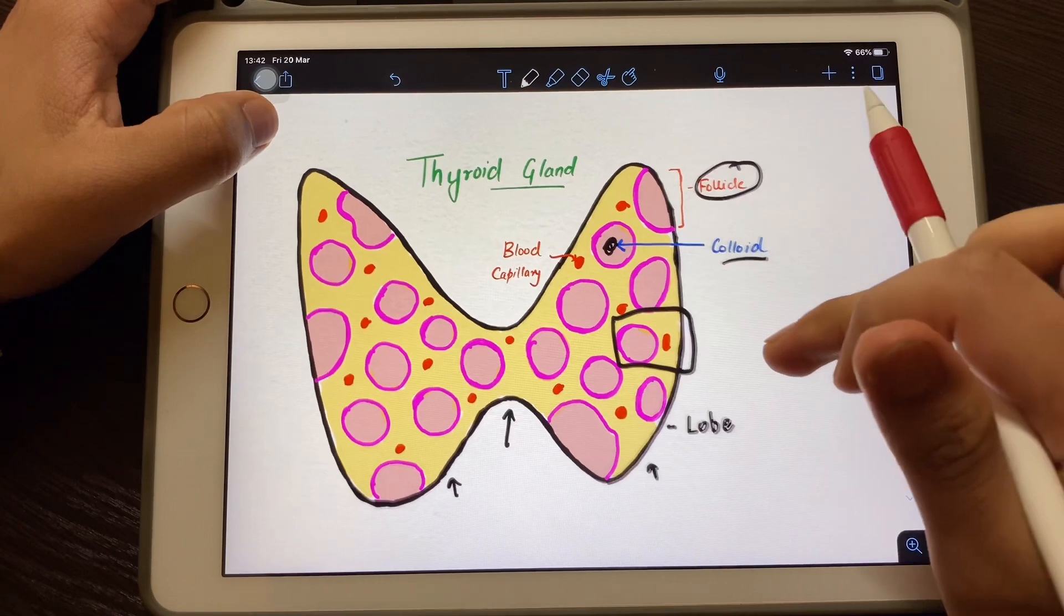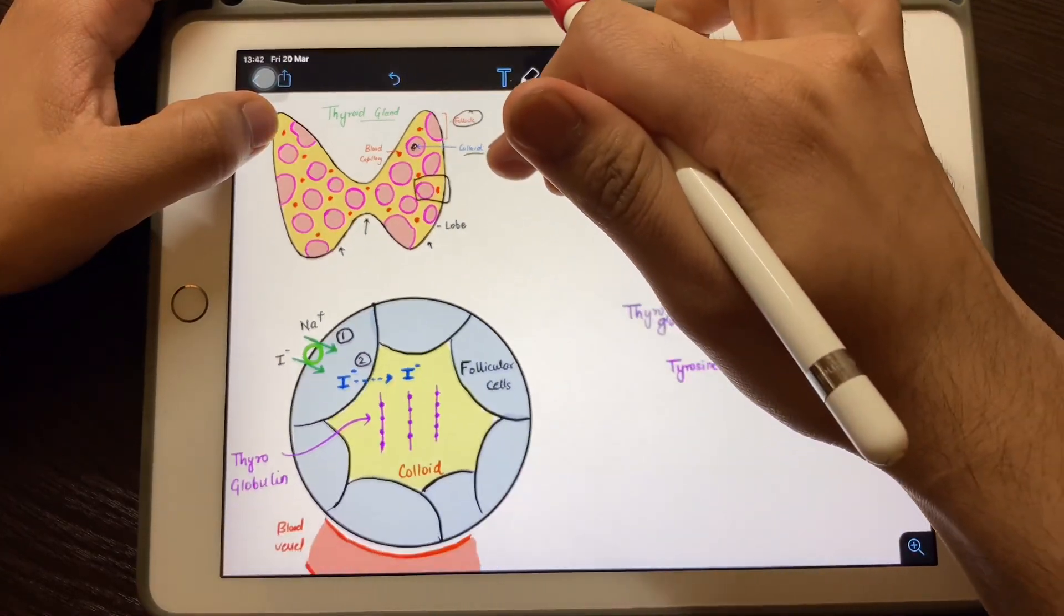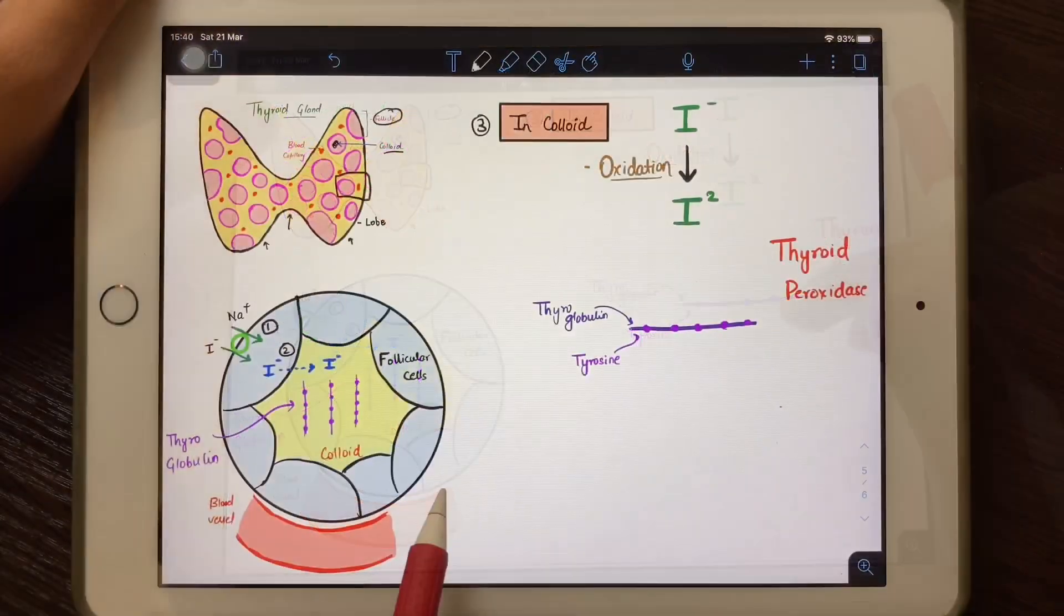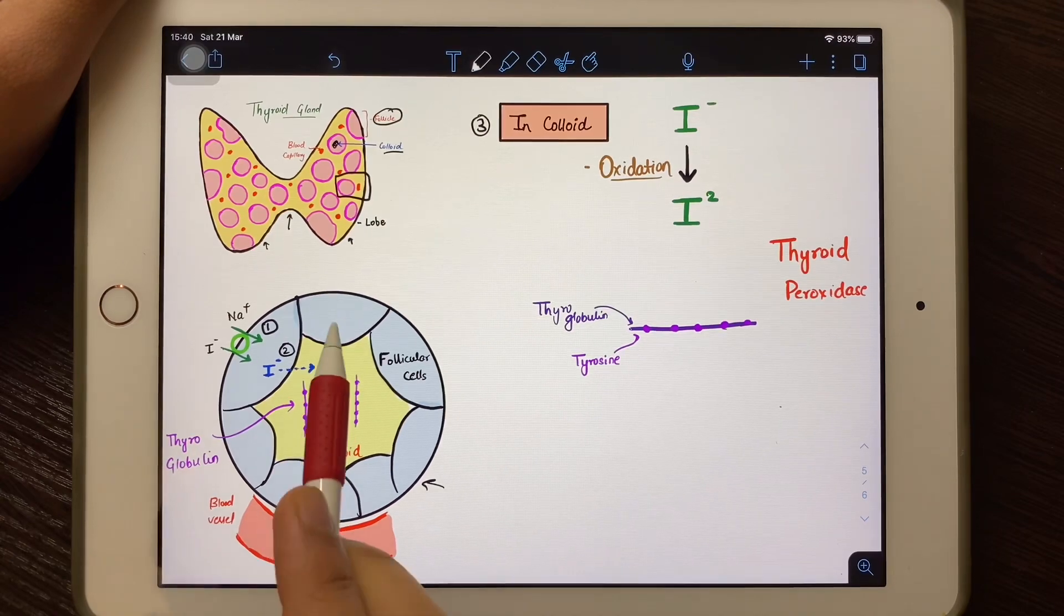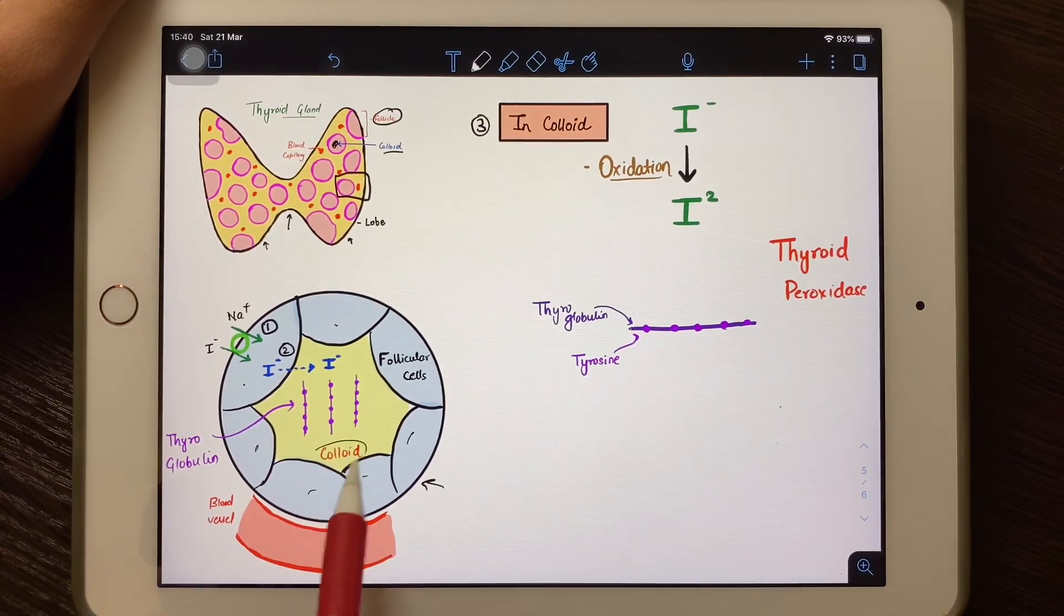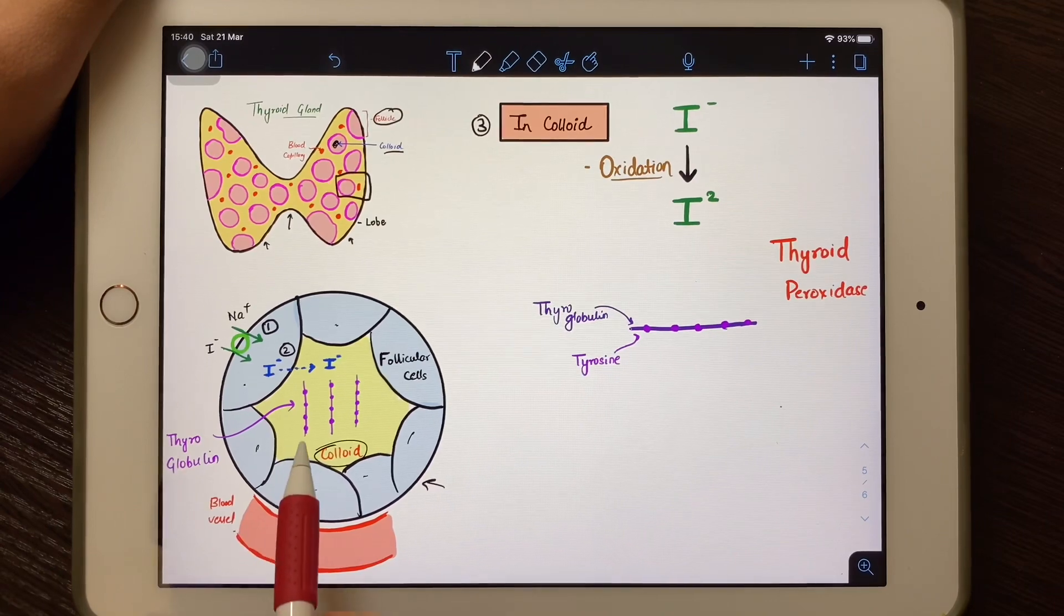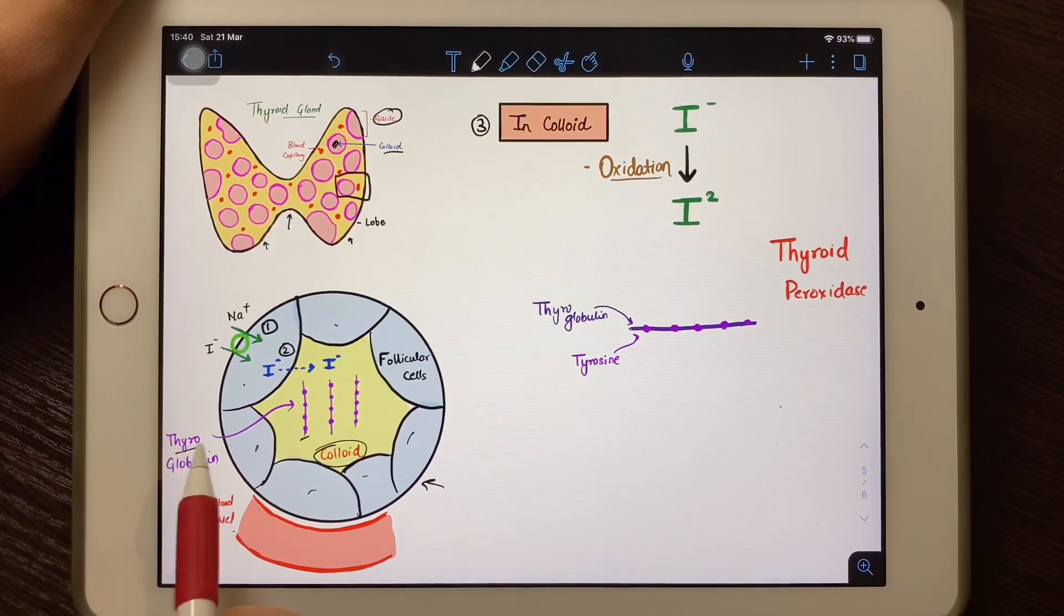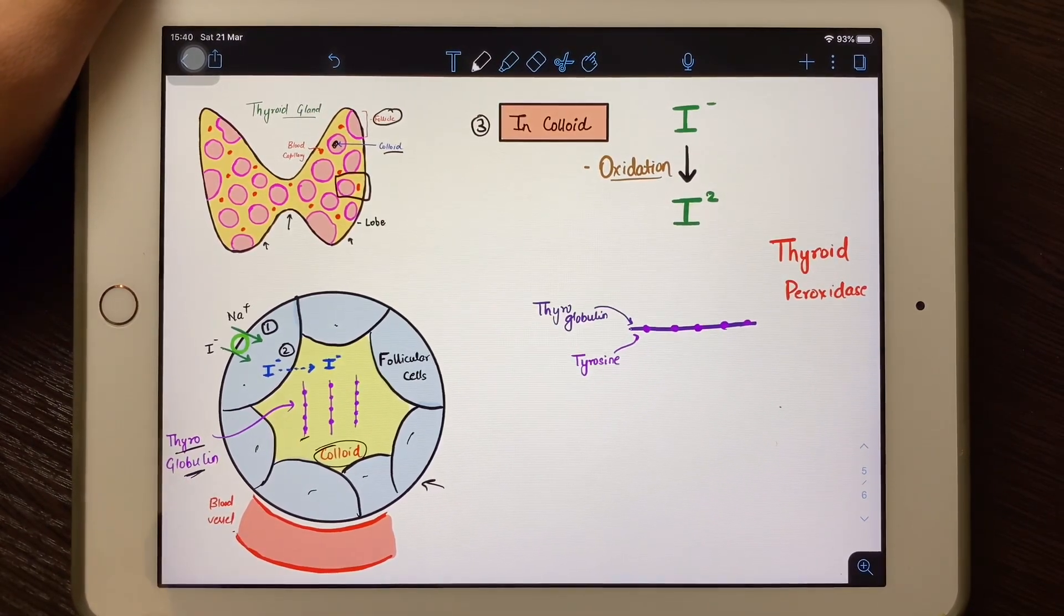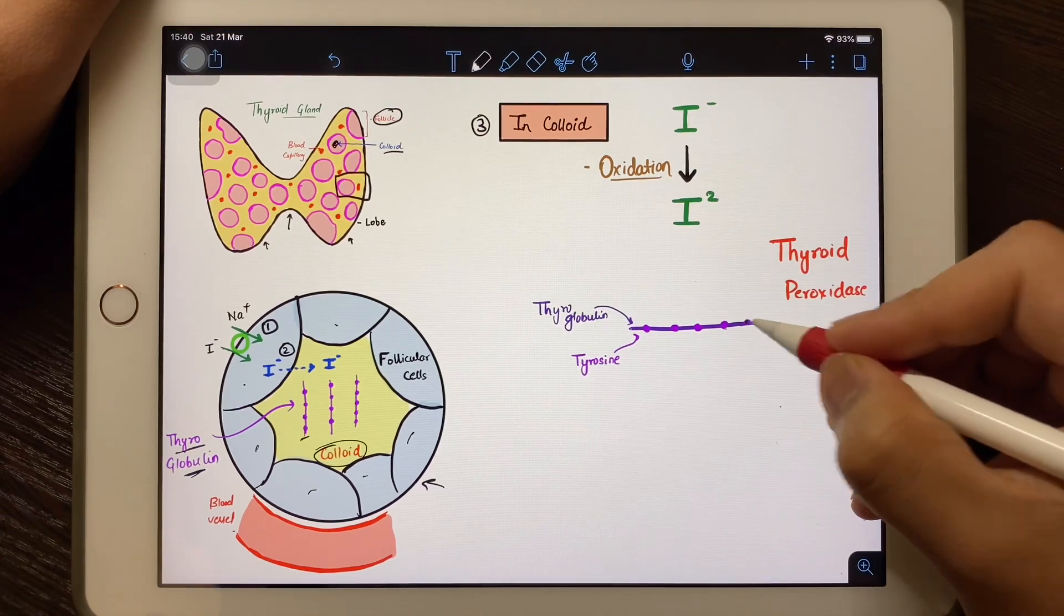If we zoom into one follicle, these are follicular cells, and in the center, this part is the colloid. In the colloid, there's a glycoprotein known as thyroglobulin, and this thyroglobulin is made up of tyrosine amino acids.